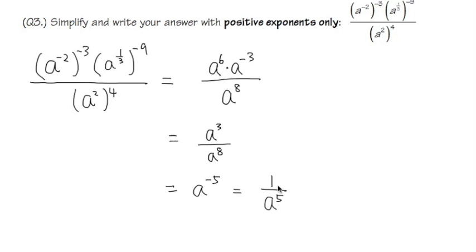Whenever you see a negative exponent, we can just change that to a positive exponent. But you need to make sure that you bring it down to the denominator. 1 over a to the positive 5. So this is pretty much it.